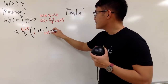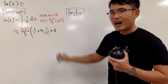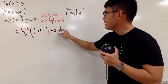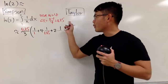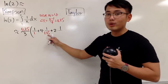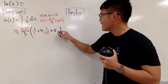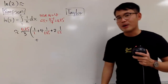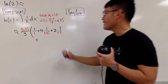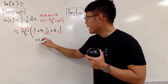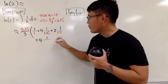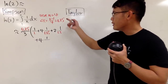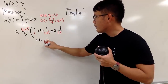Continuing, the next coefficient is 2, times the function value at x=1.5 — you just add 0.25 again. Remember, the coefficients keep alternating: 4, 2, 4, 2, 4... depending on how many subintervals you have. The next one is 4 again, times 1 over the next x value. Going from 1.5, add 0.25, we get 1.75.